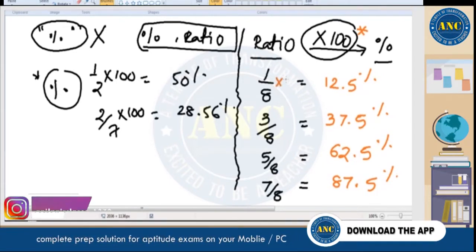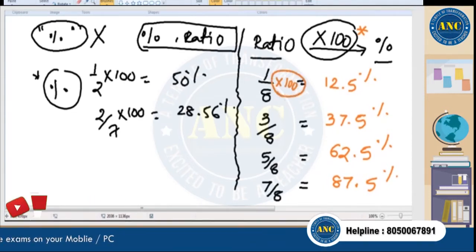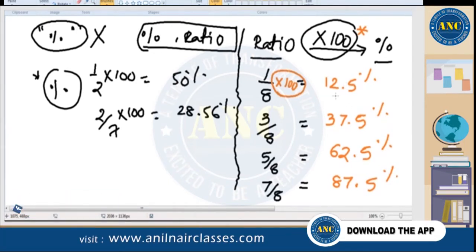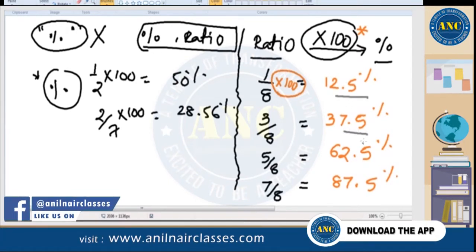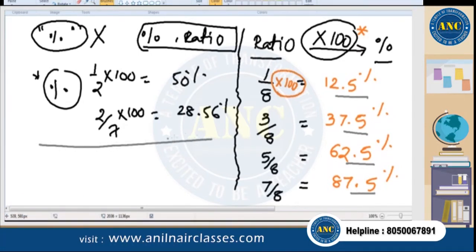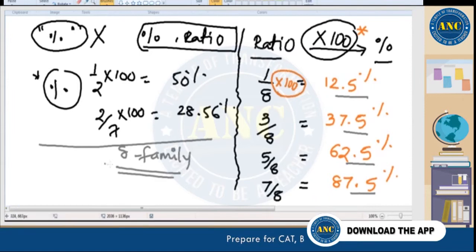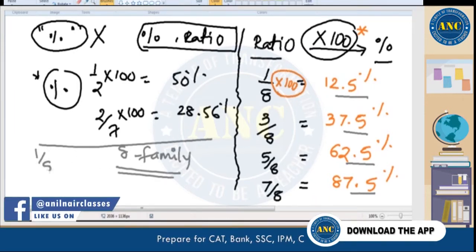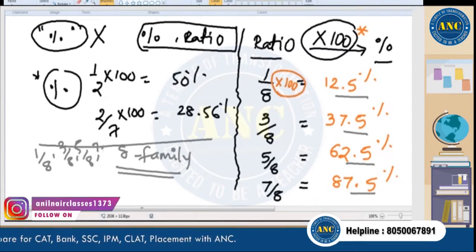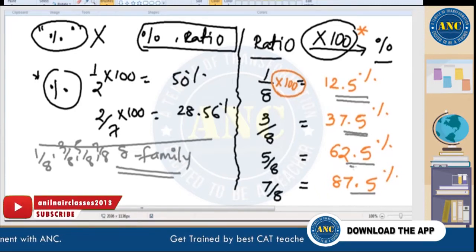In the family of 8 ratios — 1/8, 3/8, 5/8, 7/8 — the percentage answer should always end in either 2.5 or 7.5. That is the key pattern to remember.